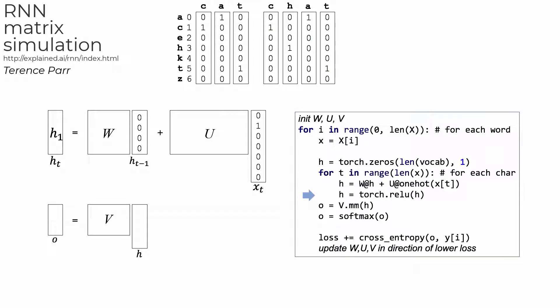The first partial result, H1, is the addition of two vectors computed from applying matrix W to H0, the zero vector, and applying matrix U to the one-hot vector for letter C, the first character of cat.